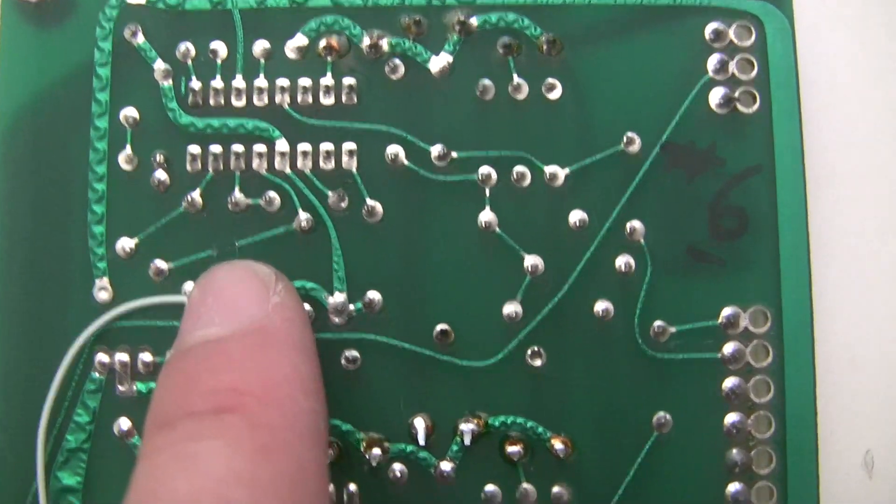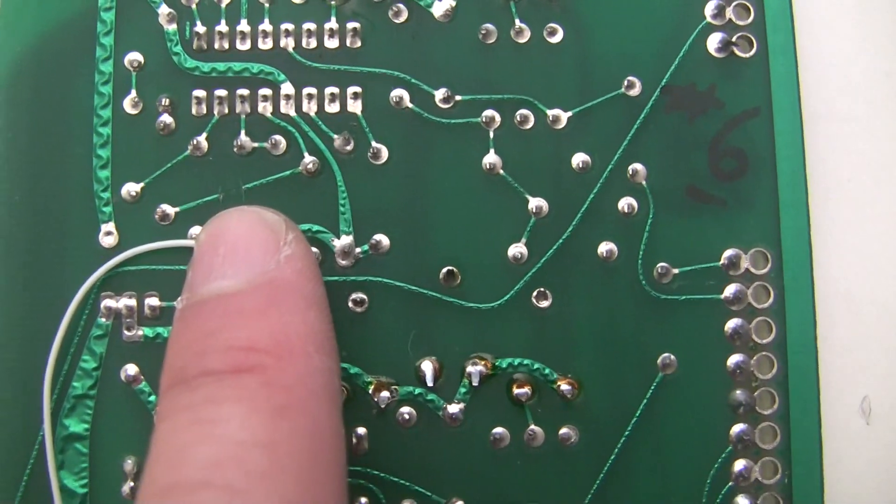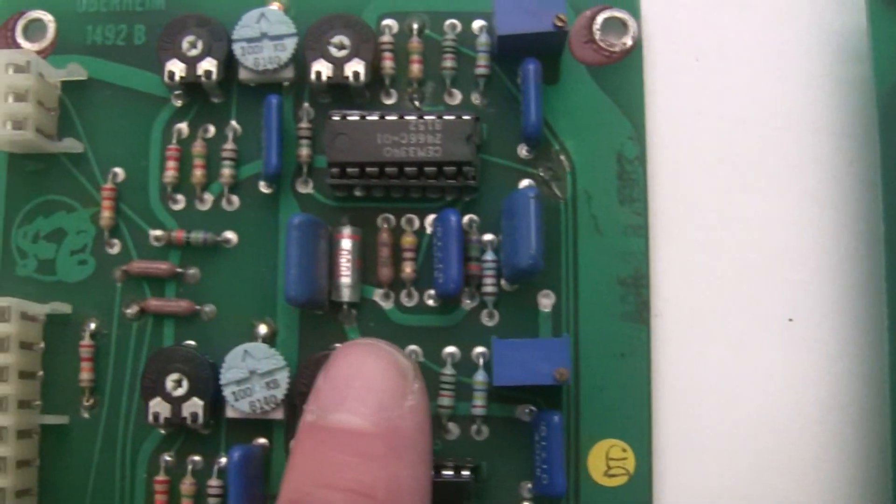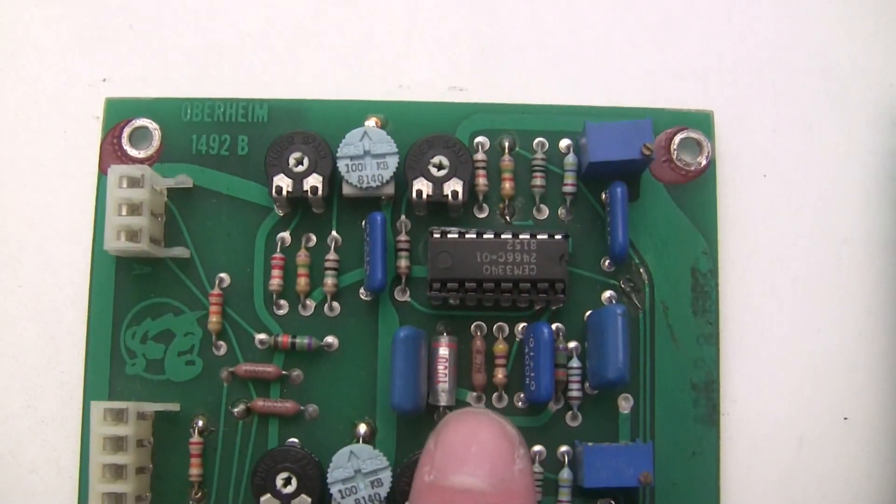See there's this cut trace here. It looks like it was done at the factory. And over here it looks very different. So I'm going to leave that mess alone and only replace the 4.7Meg resistor on this later revision one.